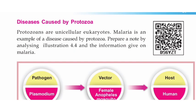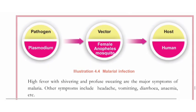Malaria is an example of a disease caused by protozoa. Malaria is a pathogen. The pathogen is Plasmodium, which is spread by the female Anopheles mosquito. The human being is the host, and the female Anopheles mosquito is the vector.